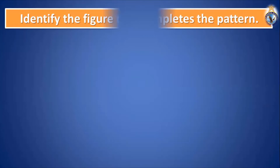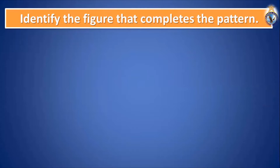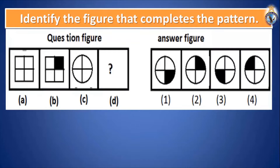Very good, let's move to our next question. Read the question: identify the figure that completes the pattern. See the figure — A and B are related to each other. According to these two figures you have to fill C and D. C is given and you have to complete the D one.